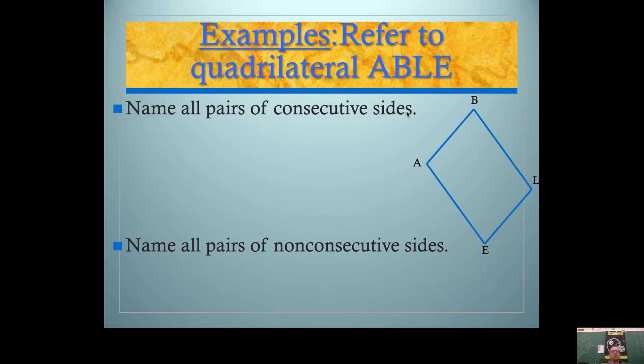Here's the same quadrilateral. Let's name all the pairs of consecutive sides. So now we're naming segments. Segment AB is next to segment BL. I can tell by looking at the picture or I can look up here. A, B, B, L. Notice how they share point B. Segment BL is also consecutive with segment LE. Segment LE is consecutive with segment AE. Segment AE is consecutive with segment AB.